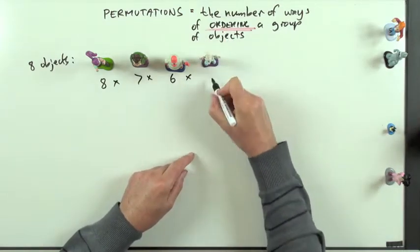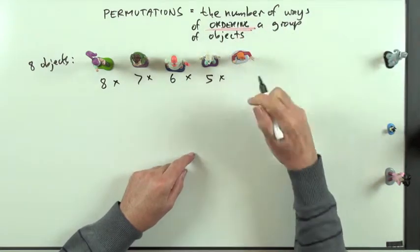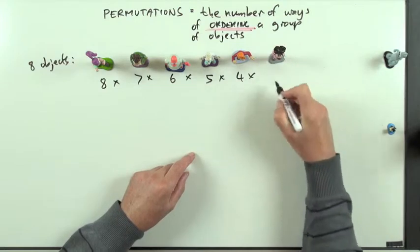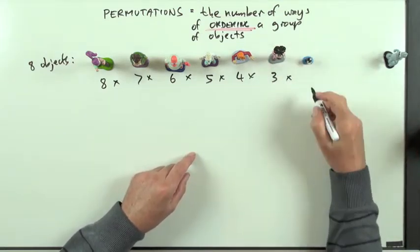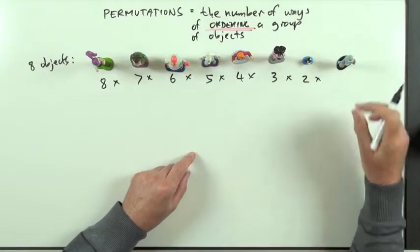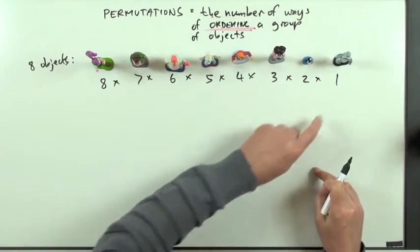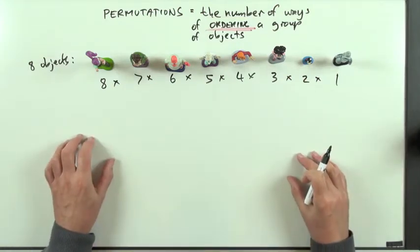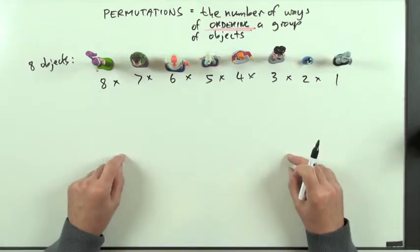Then Professor Farnsworth — four choices left. Three choices remain. Then Amy — only two to choose from. Then Nibbler, and then there's only one left: last but not least, Bender. That gives the number of ways of arranging eight objects in a line, or the finishing order for a group of eight in a race.